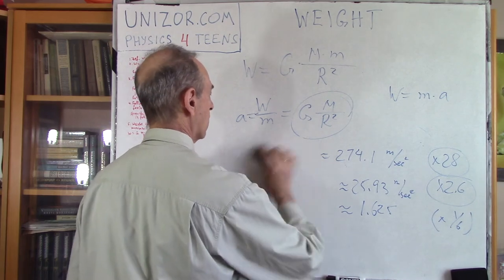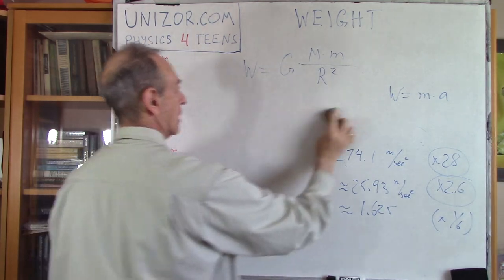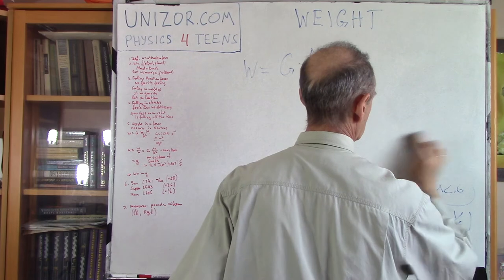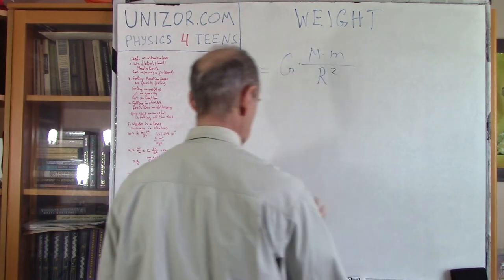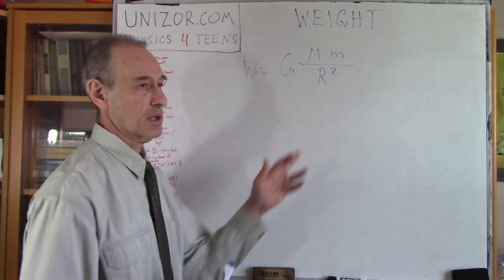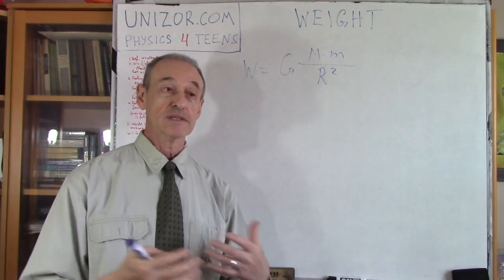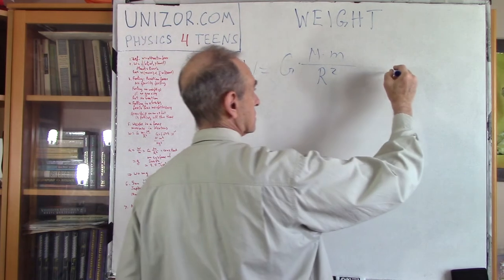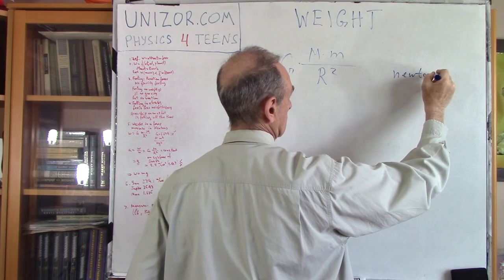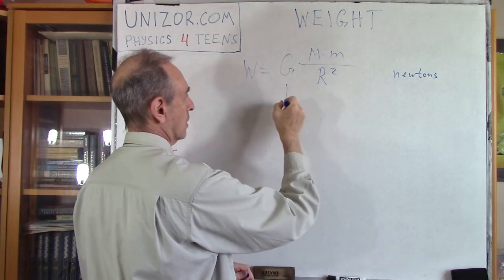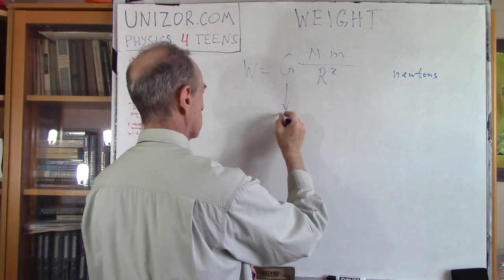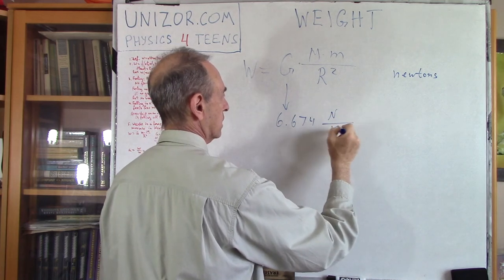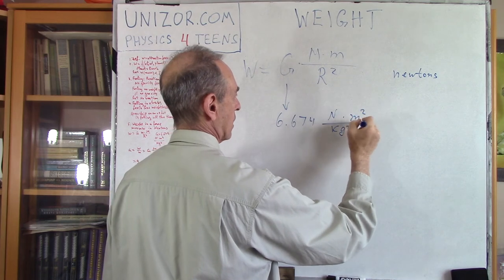Now let's think about how we measure weight. We know all these formulas. What these formulas usually give you is the weight as a force, and force in the SI system is measured in Newtons. So G, the gravitational constant, has units of something like 6.674 Newtons divided by kilograms squared times meters squared.